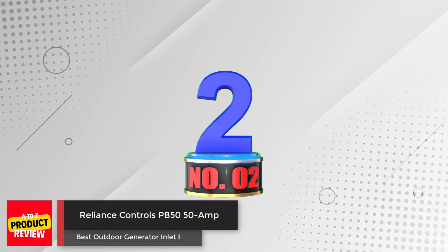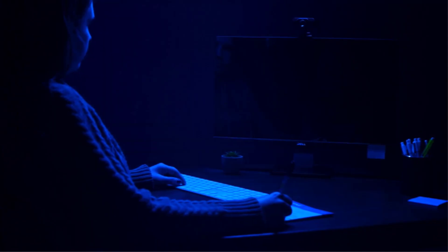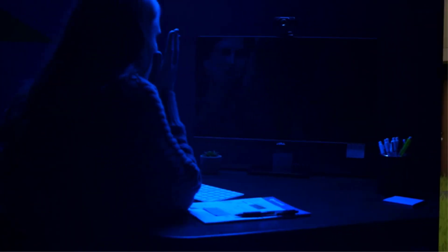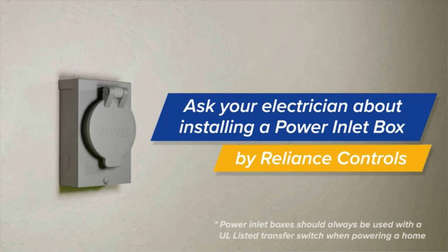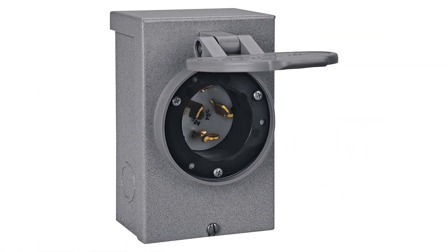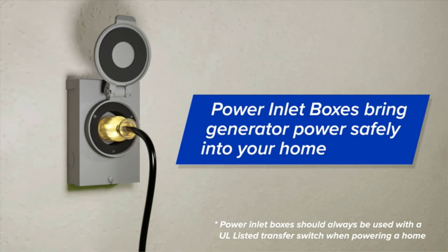Number 2. The Reliance Controls PB5050 Amp Power Inlet Box is designed for both indoor and outdoor use, and is compatible with specific transfer switches, manual transfer panels, and generator-ready load centers. It features a rain-tight NEMA 3R non-metallic box, and is intended for use with 8 AWG 75 degrees C insulated wire.